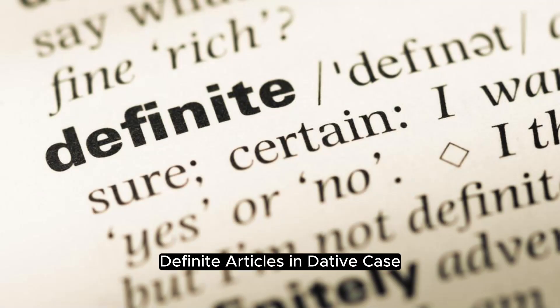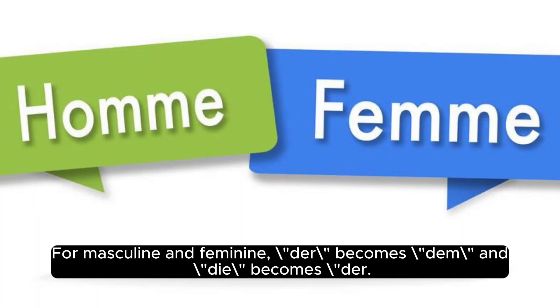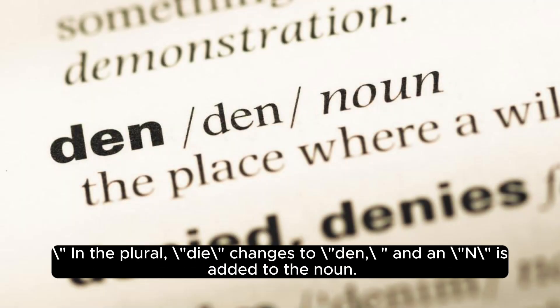Now let's explore how articles change in the dative case. For masculine and neuter, 'der' becomes 'dem' and 'die' becomes 'der' for feminine. In the plural, 'die' changes to 'den' and '-en' is added to the noun.